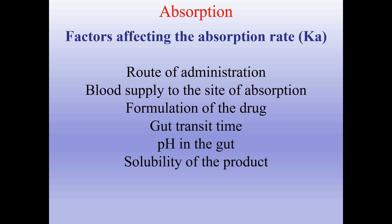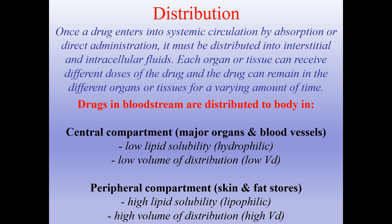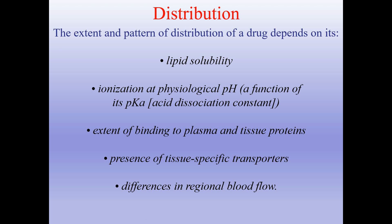Distribution. Once a drug enters systemic circulation by absorption or direct administration such as IV, it must be distributed into interstitial and intracellular fluids. Each organ or tissue can receive different doses and the drug can remain for varying amounts of time. Drugs in the bloodstream are distributed to the body in the central compartment — major organs and blood vessels, low lipid solubility, hydrophilic, low volume of distribution — and the peripheral compartment — skin and fat stores, high lipid solubility, lipophilic, high volume of distribution. The extent and pattern of distribution depends on lipid solubility, ionization and physiological pH, extent of binding to plasma and tissue proteins, presence of tissue-specific transporters, and differences in regional blood flow.